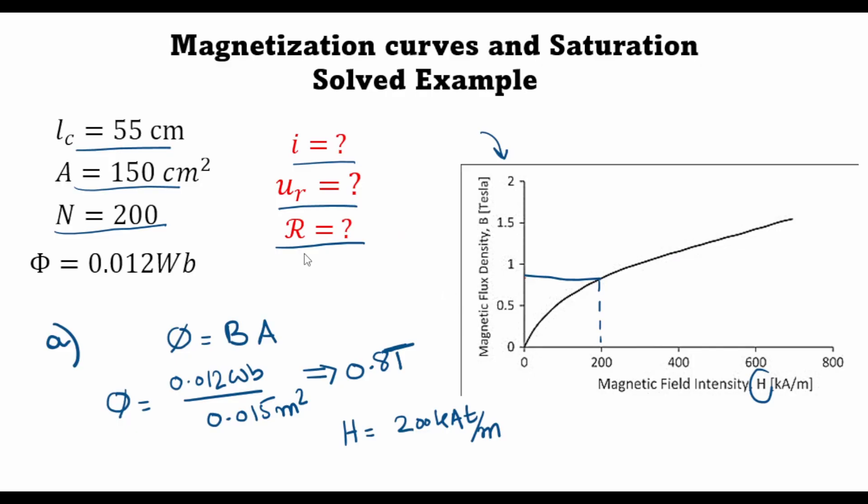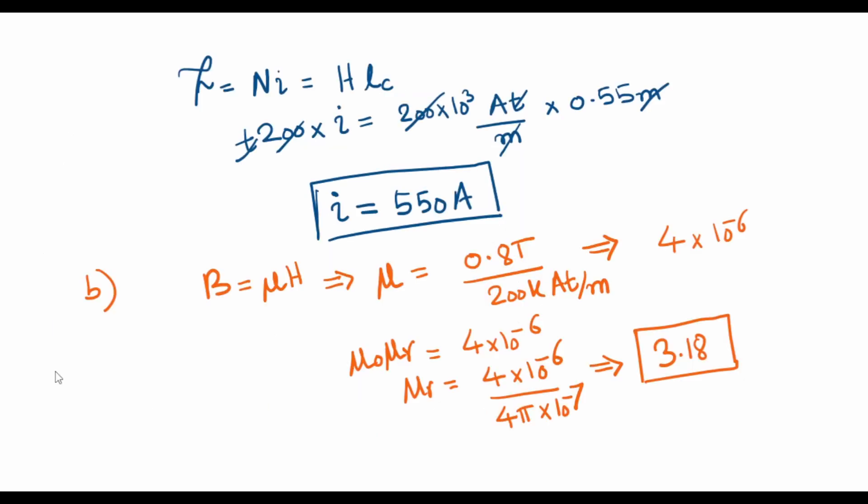Next we proceed to the last part, which asks us to compute the reluctance of this material. For this we use the analogy with electric circuits, where we know that the magnetomotive force is the equivalent of voltage, the equivalent of resistance is reluctance in a magnetic circuit, and the equivalent of current is the magnetic flux.